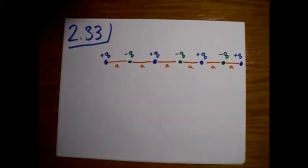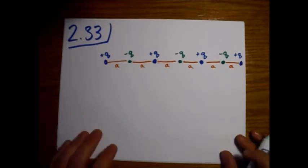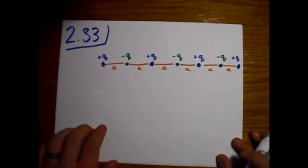Alright, so this is Griffith's problem. This is Electrodynamics problem 2.33, and what we're looking at is an infinite chain of point charges.